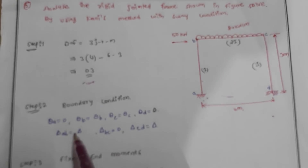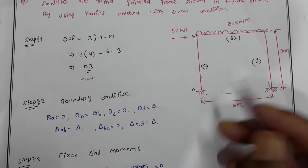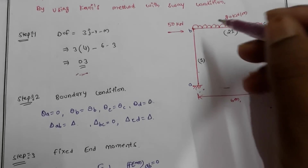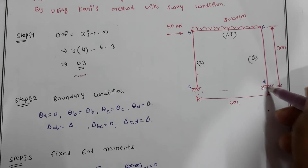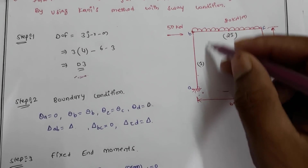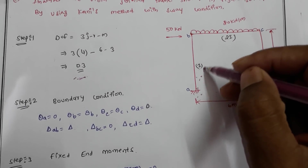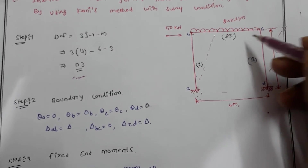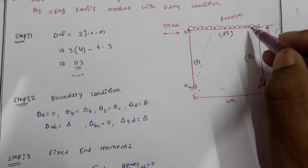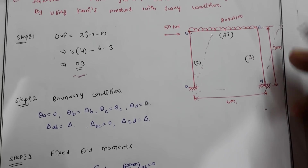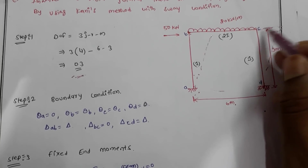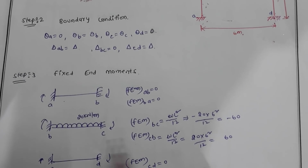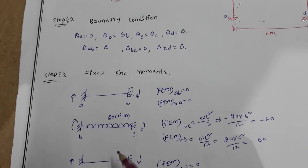Theta A equals 0 because it is a fixed support, and theta D equals 0 for the same reason. Theta B and theta C are unknowns. For sway: delta A-to-B equals delta (sway condition), delta B-to-C equals 0 (no displacement), and delta C-to-D equals delta (some displacement occurs).